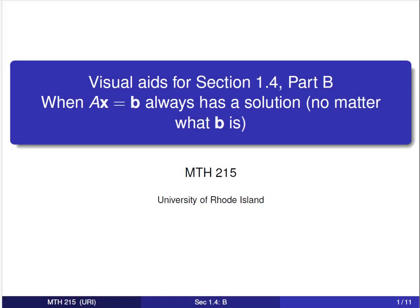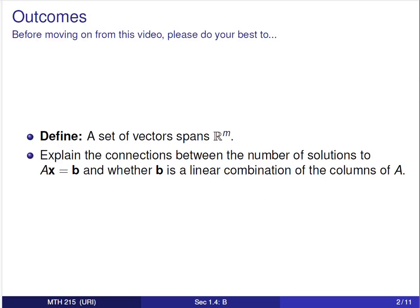Hi Math 215 students. In this video we're going to continue our discussion of section 1.4. We'll talk about when the equation Ax equals b always has a solution no matter what b is. The outcomes for this video are to define what it means for a set of vectors to span RM and explain the connections between the number of solutions to Ax equals b and whether b is a linear combination of the columns of A.